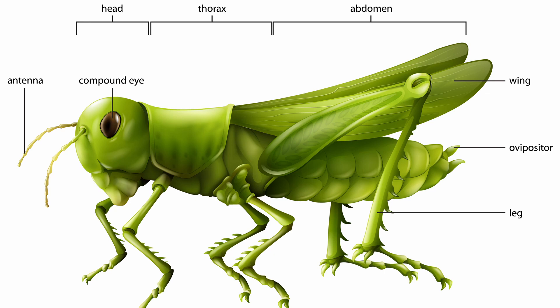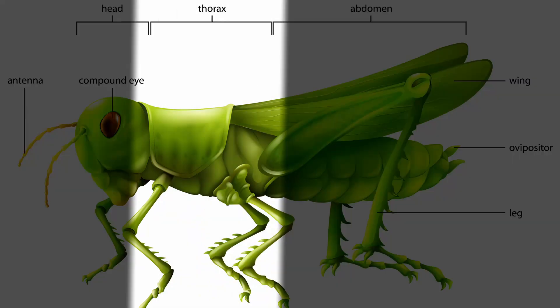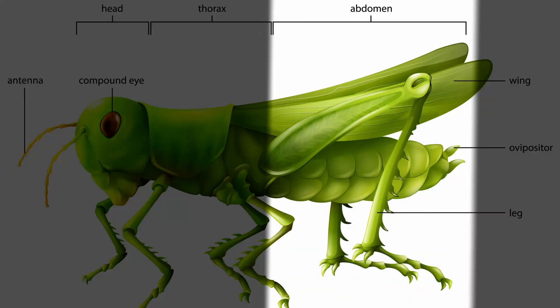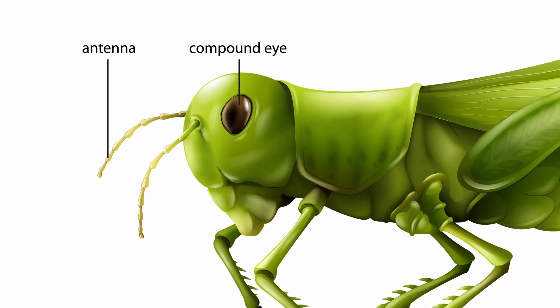In the adult stage of life, all insects have three distinct body parts, which are actually somewhat similar to the human body parts. There is a head, a thorax, and an abdomen — but let's first take a closer look at the head.